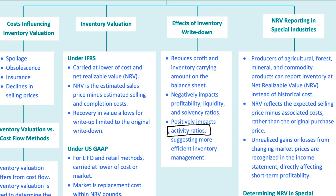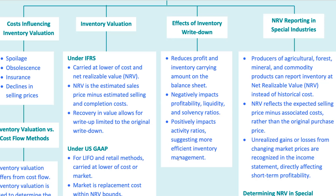Interestingly, a write-down can actually improve activity ratios like inventory turnover. Because inventory turnover measures efficiency, a lower inventory value due to the write-down makes it look like the company is managing its inventory more effectively, even though the write-down itself might indicate poor management. Don't let these ratios fool you — a high inventory turnover after a write-down might look good on paper, but it could be a sign that the company wasn't managing its inventory well to begin with.